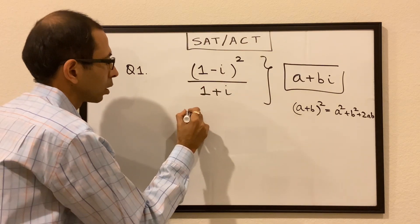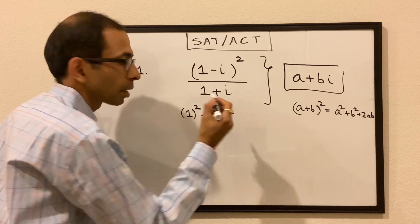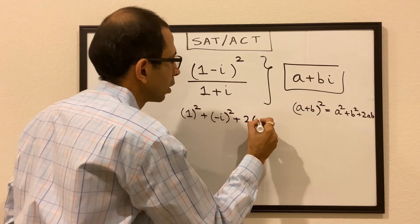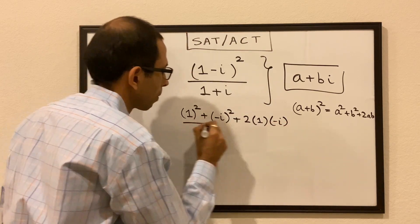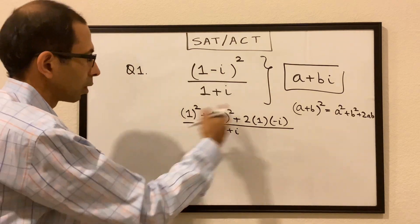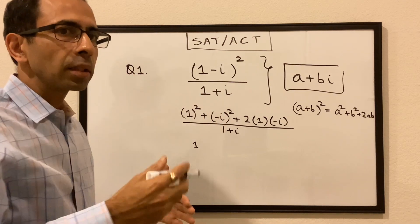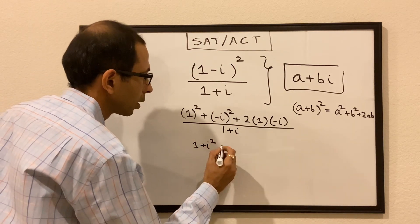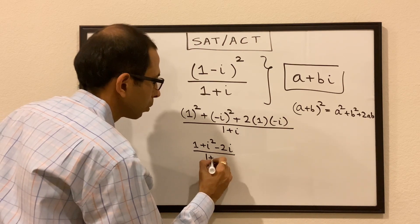So we get 1² + (-i)² + 2(1)(-i) divided by (1 + i), which simplifies to 1 + i² - 2i divided by (1 + i). The (-i)(-i) term gives us i².